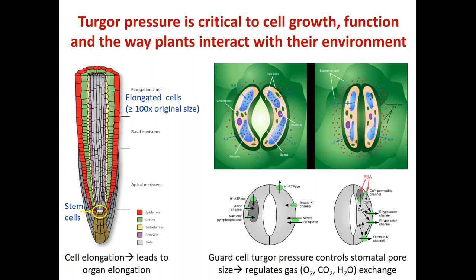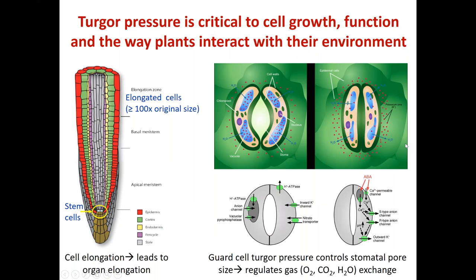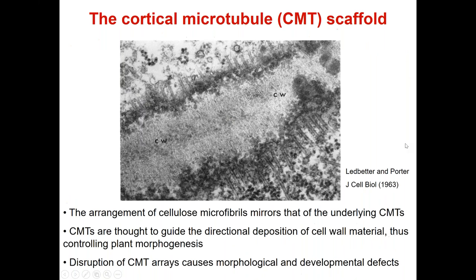Getting back to the question of cell wall anisotropy: why doesn't the plant cell just balloon and become a large sphere? Instead many cells have defined shapes. That relies on cell wall patterning, and the mechanism is very intimately connected with the microtubule cytoskeleton.